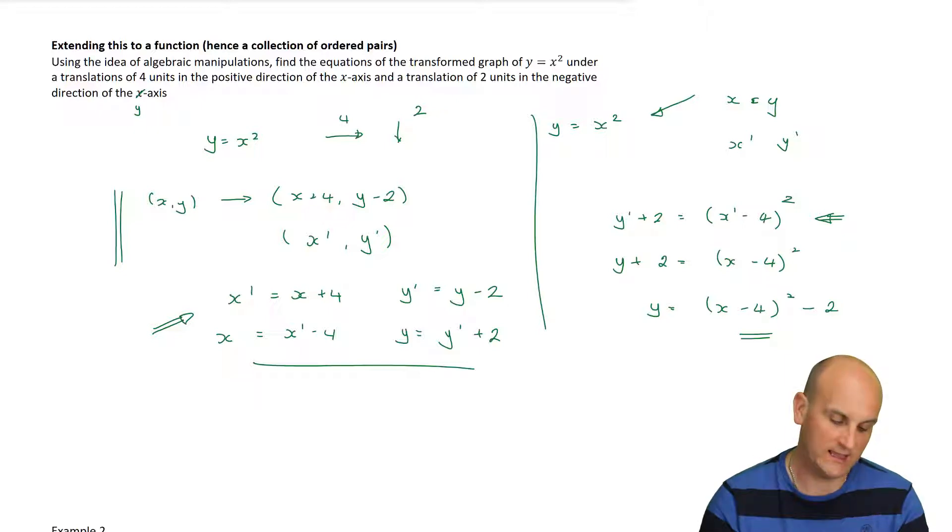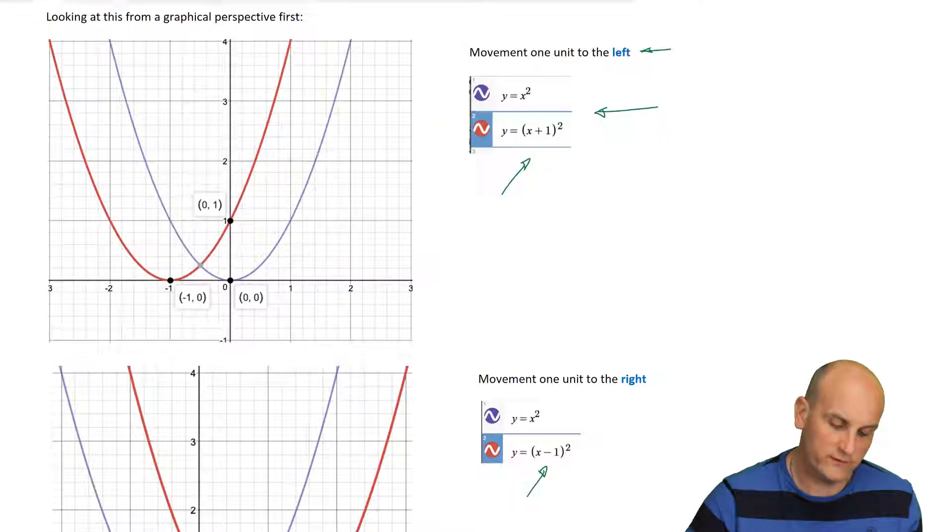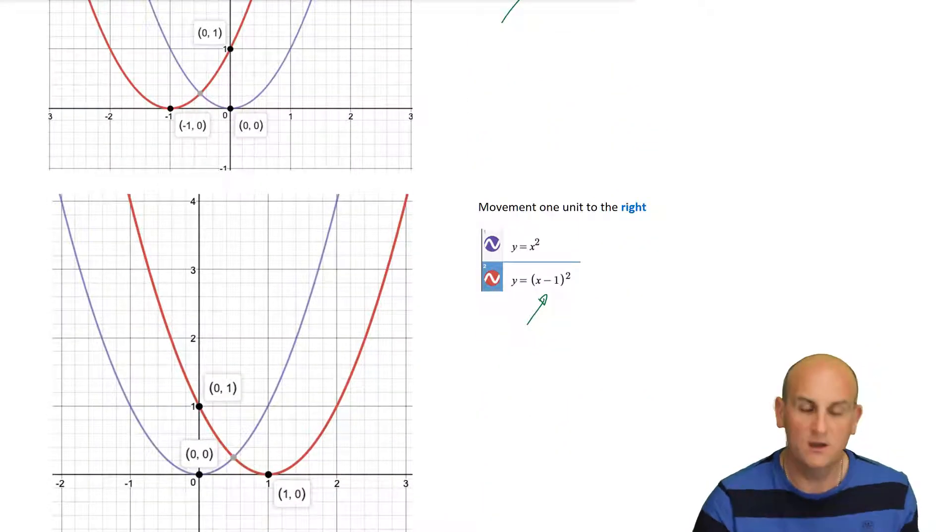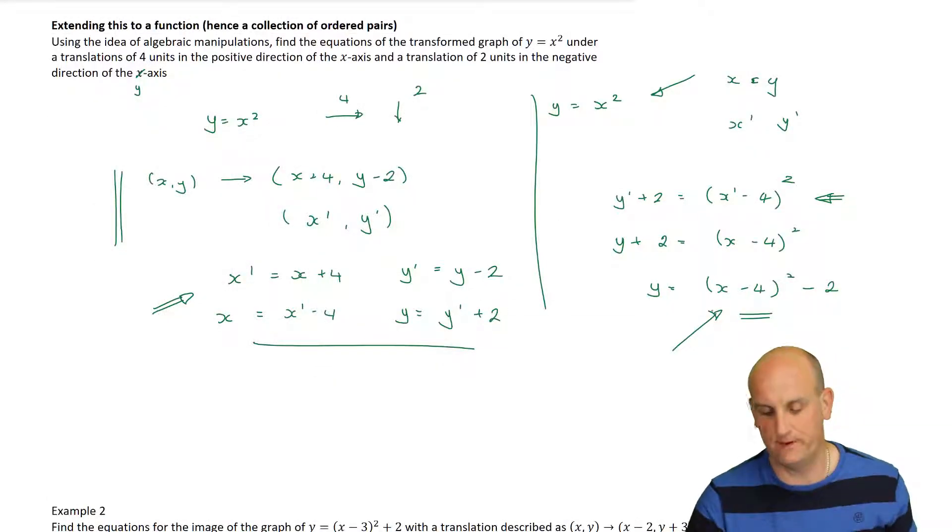Now, let's just check. Did we have four units in the positive direction of the x-axis? Now, if we go back to this previous graph here, when we wanted to go positive, so when we wanted our graph to move right, we needed to have a minus inside that bracket. And, lo and behold, we have a minus inside that bracket. Outside the bracket, we wanted two units down. And, did it move two units down? It did. Much respect. Love this stuff.